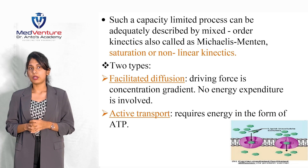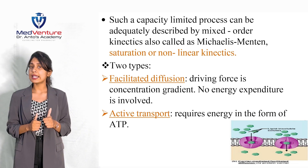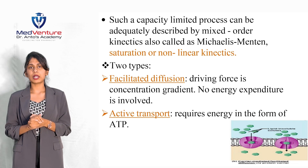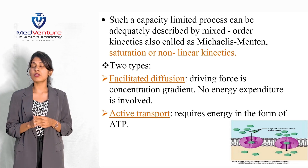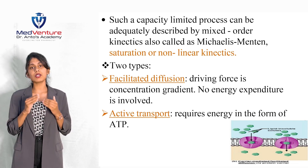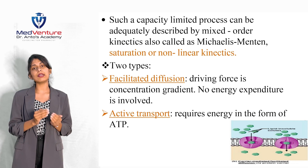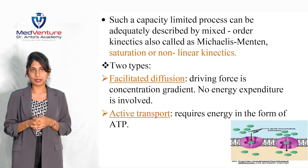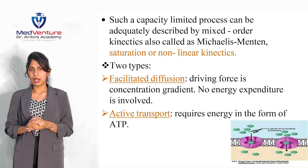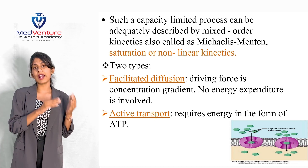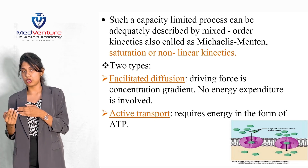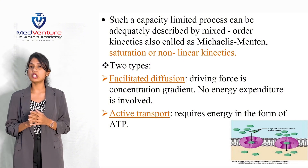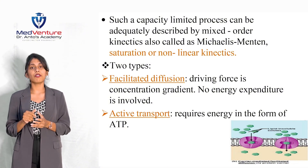There are two types of carrier-mediated transport: facilitated diffusion and active transport. In facilitated diffusion, the driving force is a concentration gradient — movement occurs from higher to lower concentration. In active transport, energy in the form of ATP is used to move solutes from lower to higher concentration.